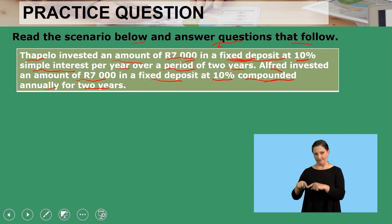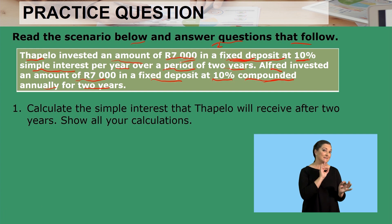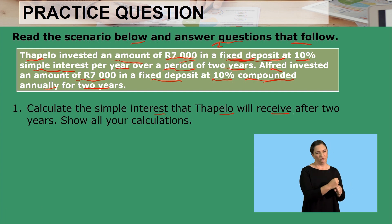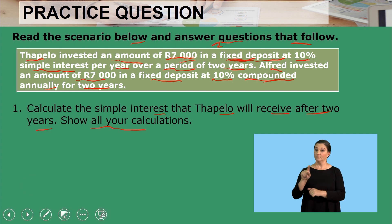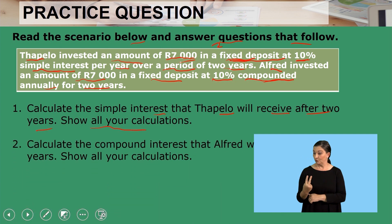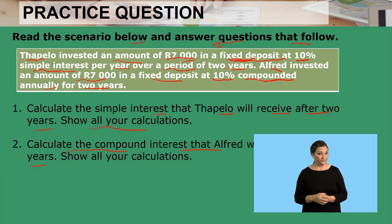Let us look into our questions. Question one: calculate the simple interest that TAPELO will receive after two years and show your calculations. Question two: calculate the compounded interest that Alfred will receive after two years and show your calculations.